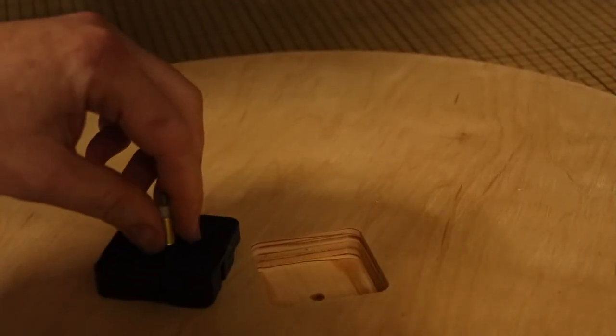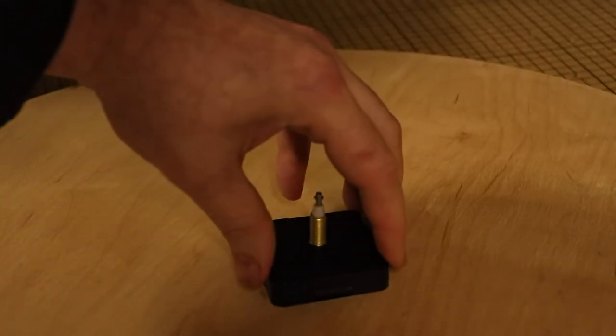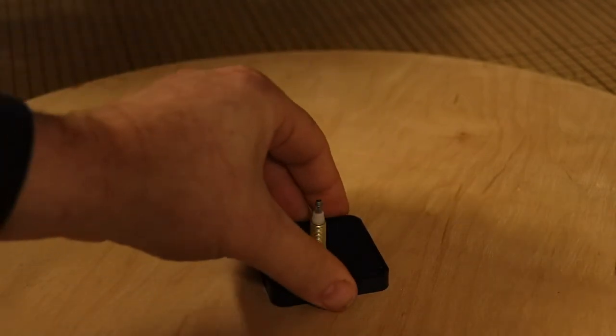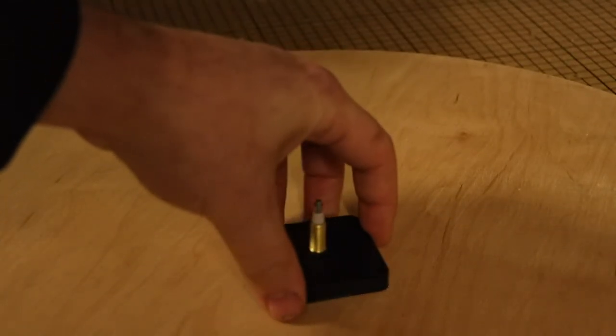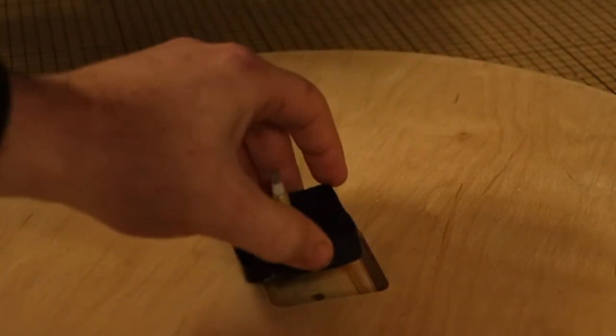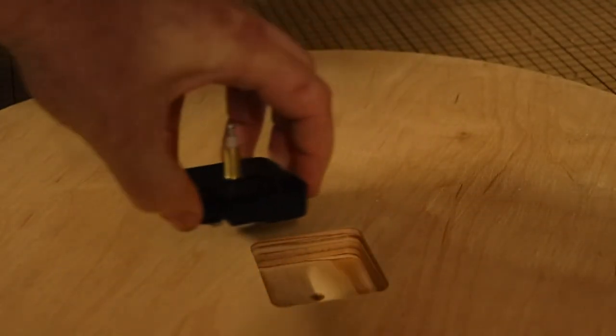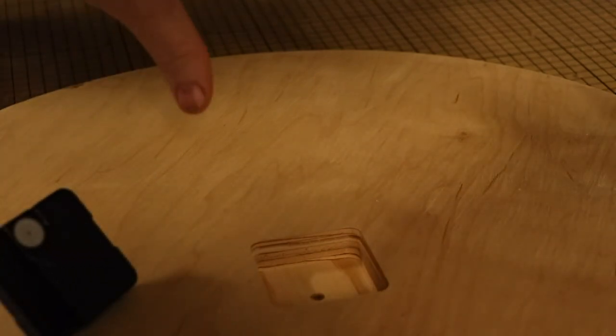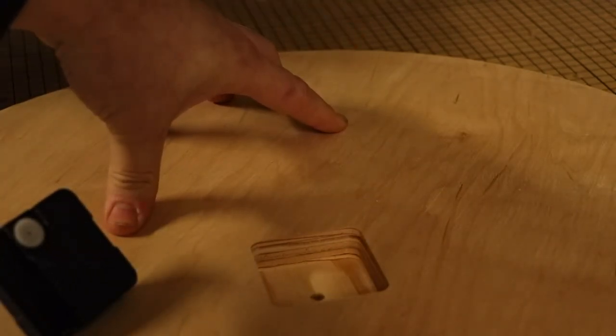Okay, so now we've got our pocket cut and the clock body, or the clock mechanism, fits in there nice and snug. If I push any harder, it's going to get stuck, so I don't want to do that, but it's a nice, tight fit. So now we can go ahead and get it brought back to the shop and get it painted and whitewashed and put some hands on it and hang it on the wall.